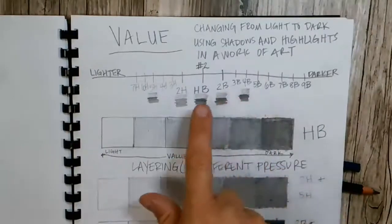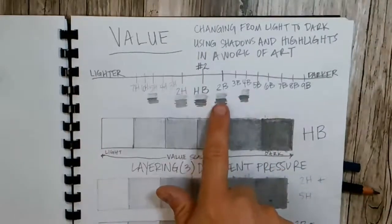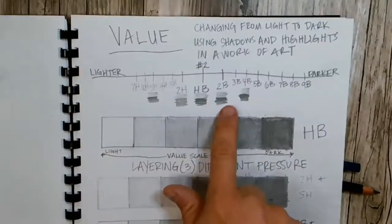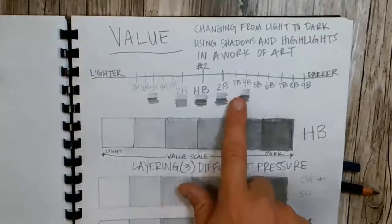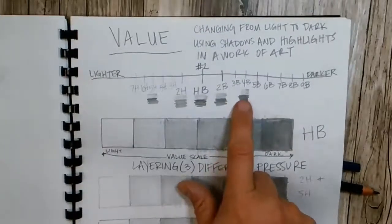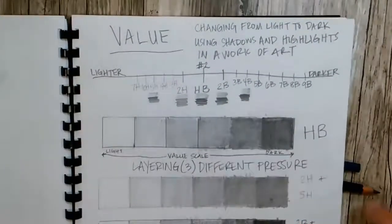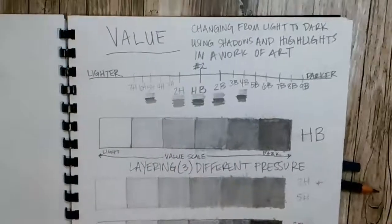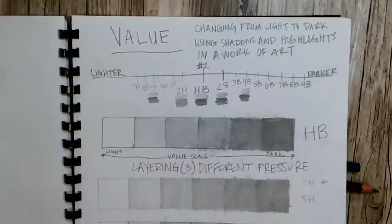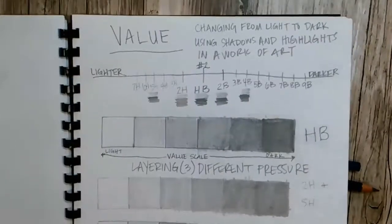And remember, 2B is darker than HB. And 4B is darker than 2B. So, your darkest pencil that I gave you today is 4B. And then the same with the lights. The lightest pencil I gave you today was either 5H or 4H.